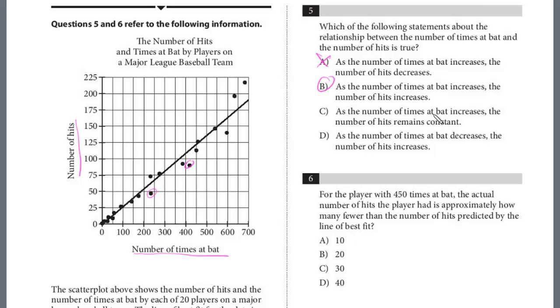C, as the number of times at bat increases, the number of hits remains constant. We don't have a flat straight line. D, as the number of times at bat decreases, the number of hits increases? No. We have a positive slope. So straightforward question number five.